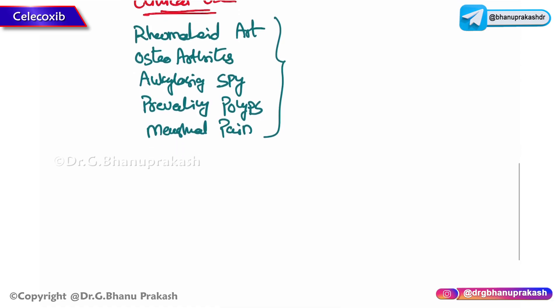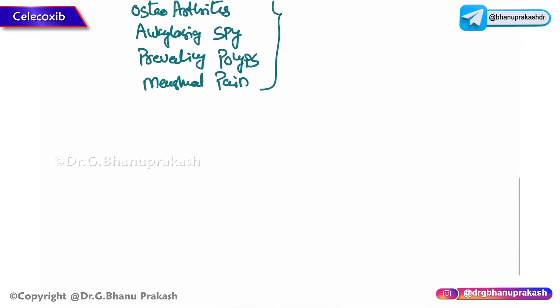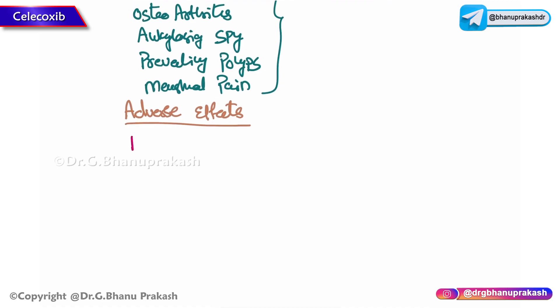Now let's discuss the adverse effects. There will be a risk of thrombosis. By selectively inhibiting COX-2, Celecoxib may alter the balance of pro-thrombotic and anti-thrombotic factors, leading to a clotting risk. Therefore, careful consideration must be taken in patients with cardiovascular diseases or those at higher risk.